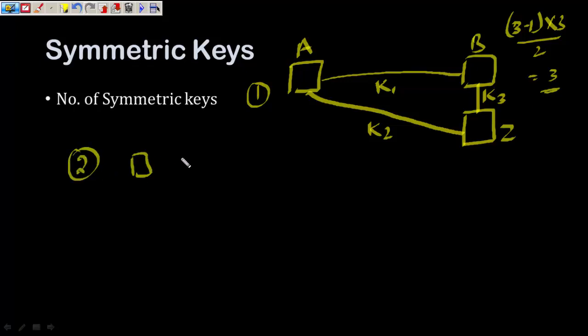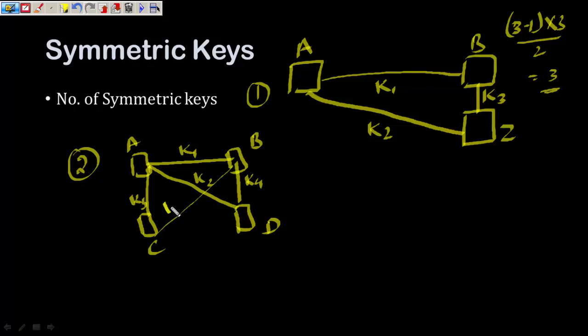Let us look at another scenario. If there are four people A, B, C, D: A wants to communicate to B, D, C, so it gets K1, K2, K3. B wants to communicate to D, it gets K4. B to C, it's K5. D can talk to B by using the same key K4, can talk to A by K2, and will need K6 to talk to C. And C when wants to talk to A, it's K3, K5 for B, and K6 for D.